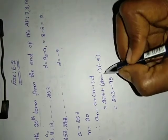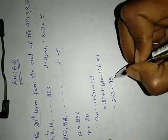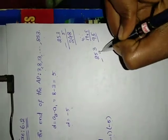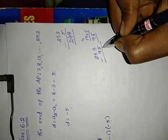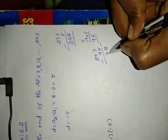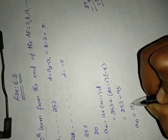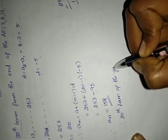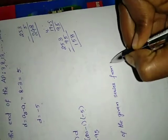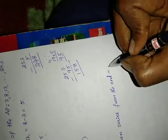So it becomes minus 95. Therefore 253 minus 95 equals 158. So a_n equals 158. Therefore the 20th term from the end of the given series equals 158.